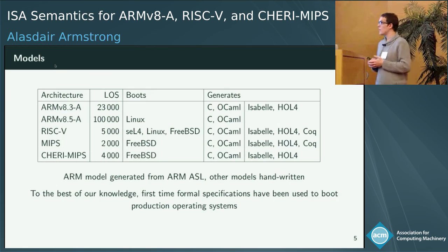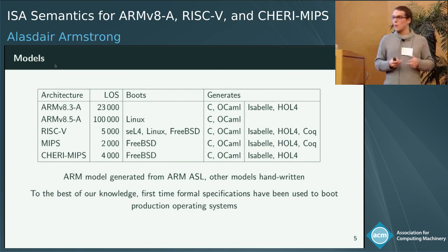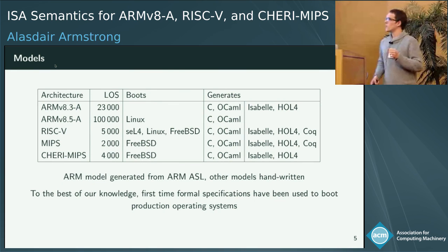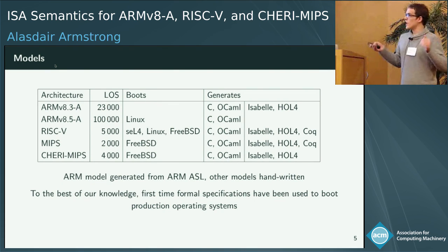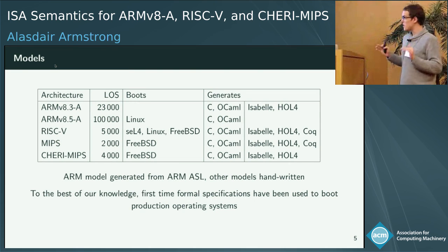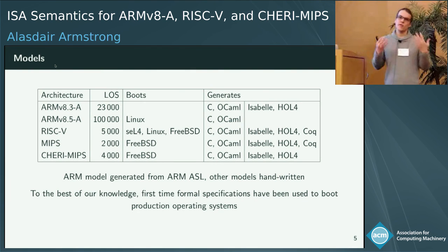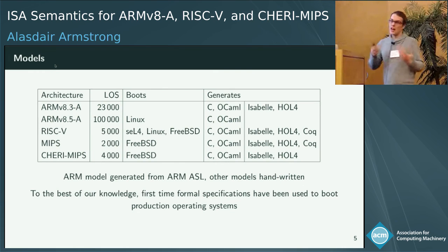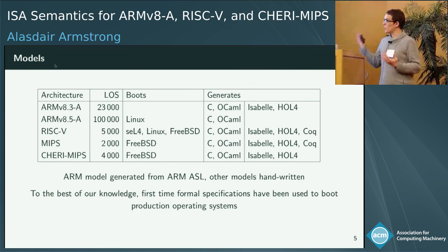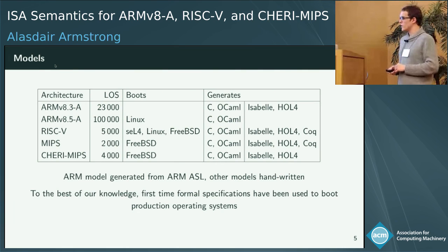Now I'll talk about our ARM model in more detail. In the paper we were working with ARMv8.3, a public version without system-level features — about 23,000 lines of code. As of last Friday, we've released with ARM's permission a full ARMv8.5 release, which is about 100,000 lines of source total. Using that, we can boot Linux on it — it's complete enough to boot an operating system. To the best of our knowledge, this is the first time formal specifications have been used to boot production operating systems like FreeBSD and Linux.